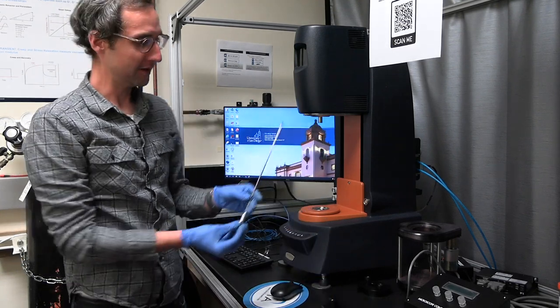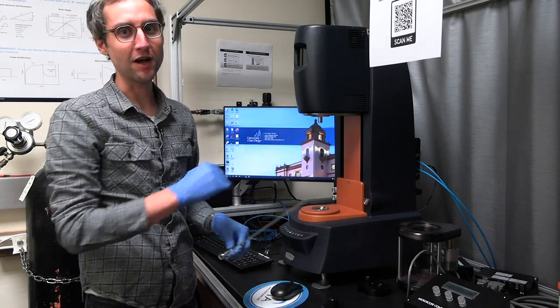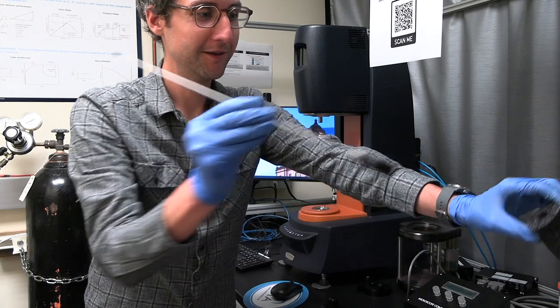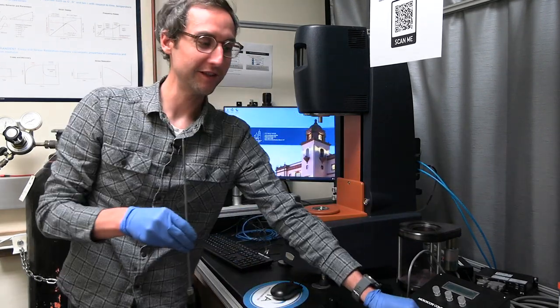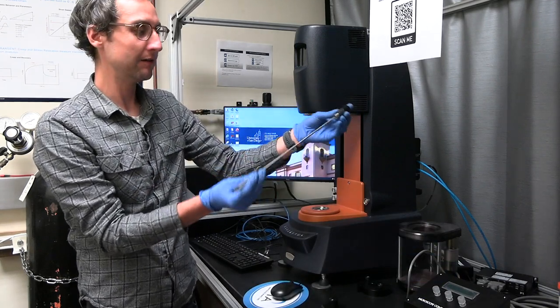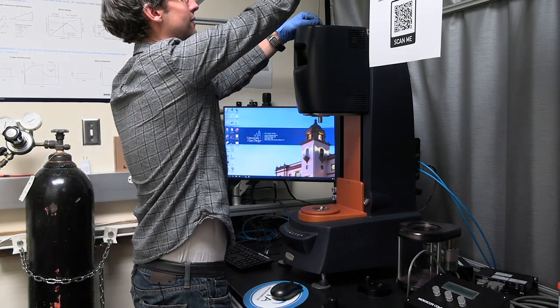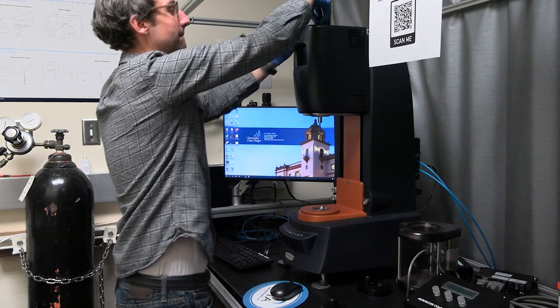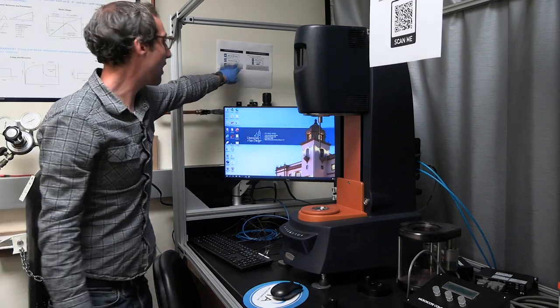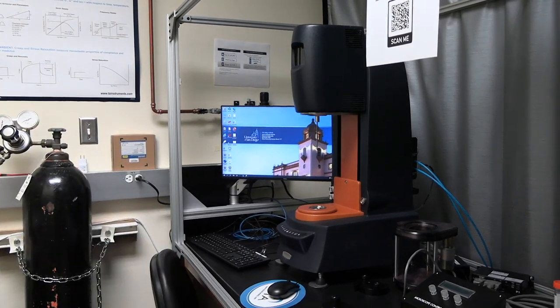We're going to replace this draw rod with a draw rod that has a temperature probe so that we can control the temperature of the upper plate. So this is our longer draw rod which has a temperature sensor at the end. So that goes up here. I can now power up. Now that I've removed this cap, you can power up the rheometer. So the on switch is just on the black box under here.